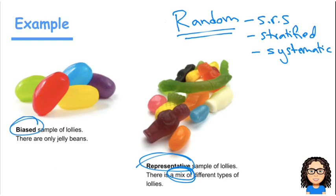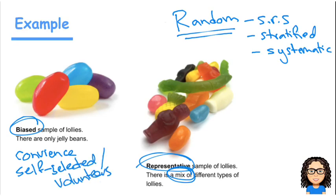However, any kind of bias method, so if I did, for example, a convenience method, if I did a self-selected or voluntary volunteers, then that will give me a bias sample, which will not give me that representation.